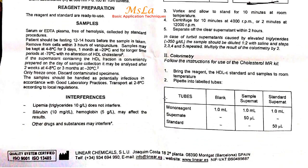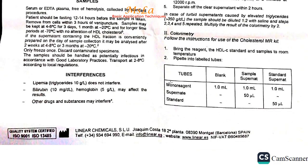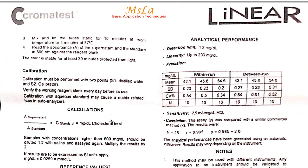For the precipitation test: set up test blank, sample supernatant, and standard supernatant. Add cholesterol reagent. Use 50 microliters of sample supernatant for the sample test and 50 microliters for the standard test. Mix and incubate at room temperature for 10 minutes, then incubate at 37 degrees for 5 minutes.